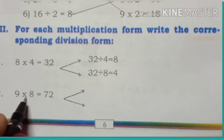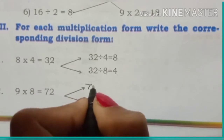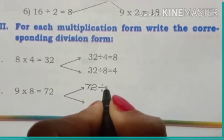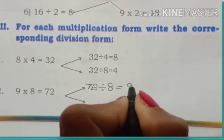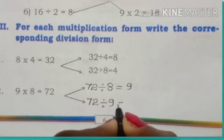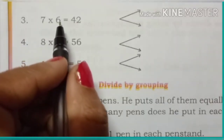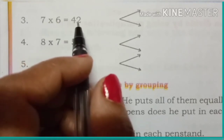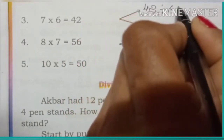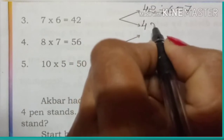Second question: 9 multiplied by 8 is equal to 72. Write the division form: 72 divided by 8 is equal to 9, and 72 divided by 9 is equal to 8. Third question: 7 multiplied by 6 is equal to 42. Write the division form: 42 divided by 6 is equal to 7, and 42 divided by 7 is equal to 6.